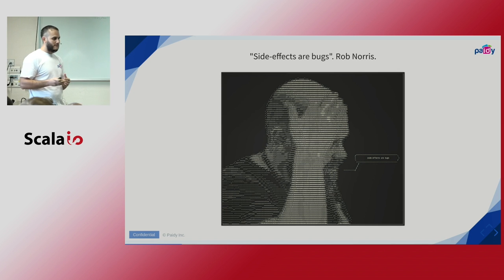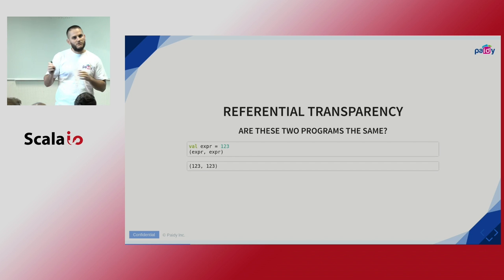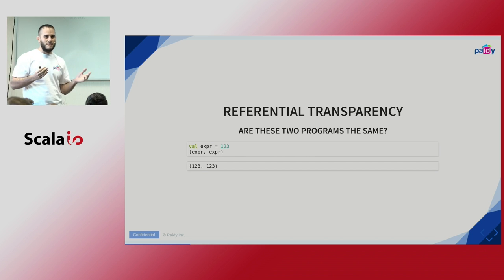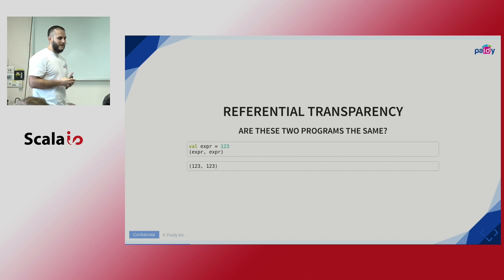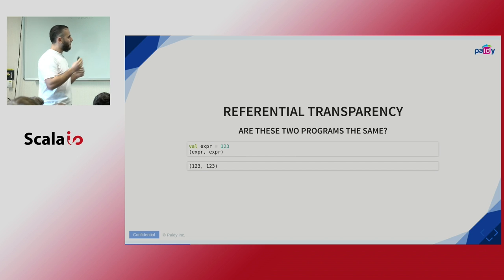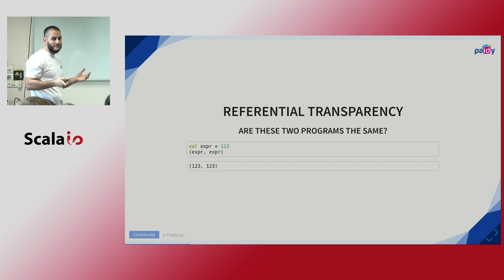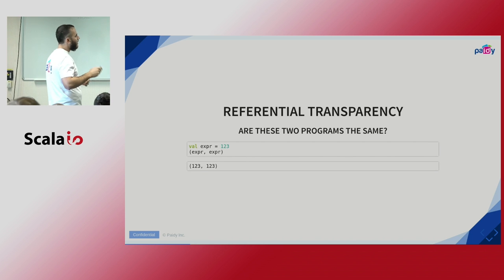Distinguishing between effects and side effects is important because we can then talk about referential transparency, which in my opinion is the key to doing functional programming in any language. We have an expression bound to the value 1-2-3, and we can create a tuple of this expression. To tell whether two programs are the same, we use substitution — whenever we see the expression, we substitute with the value and compare. In this case, the meaning is the same, so it's referentially transparent — a pure value with no side effects.